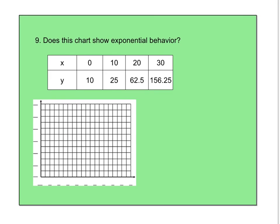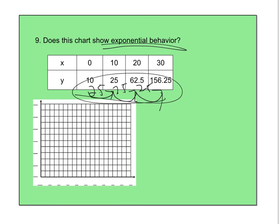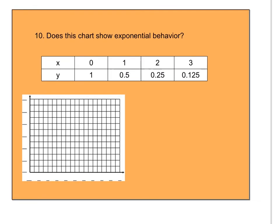Finally, how do I tell if a data table shows exponential behavior? I check whether I'm multiplying by the same factor each time. From 10 to 25 is multiplying by 2.5; 25 times 2.5 is 62.5 — yes, that's consistent, so it's exponential. For another table, going from one value to the next by dividing by 2 (multiplying by 1/2) consistently — yes, that also shows exponential behavior.